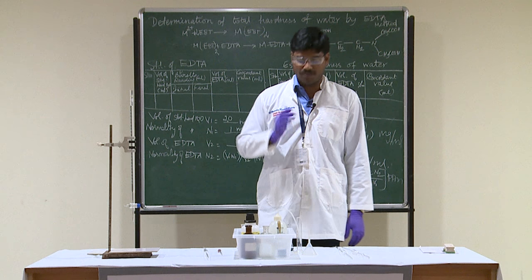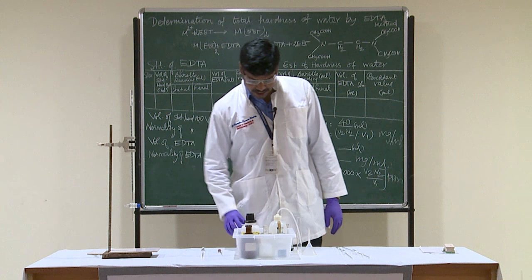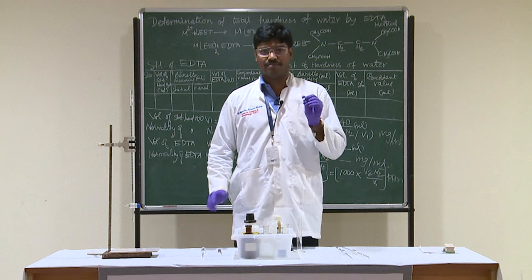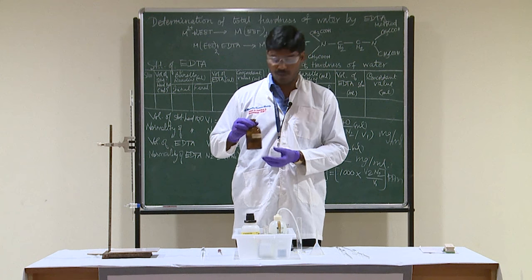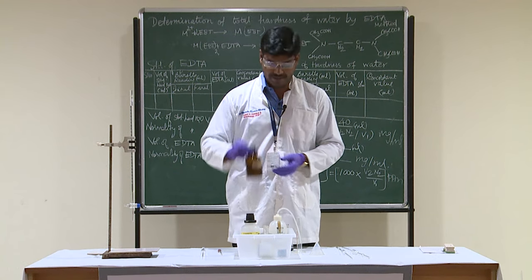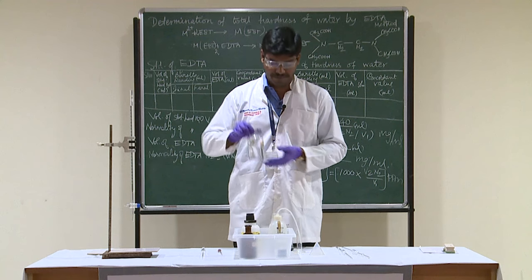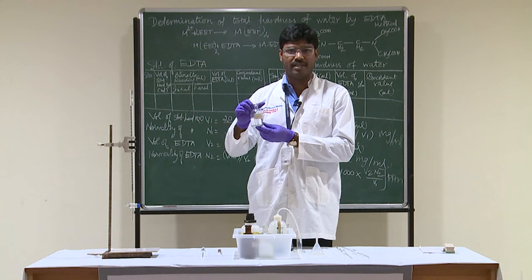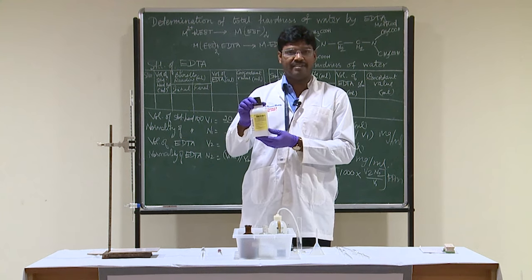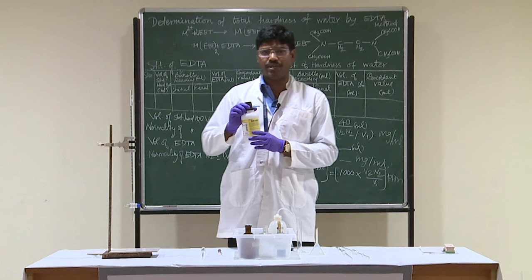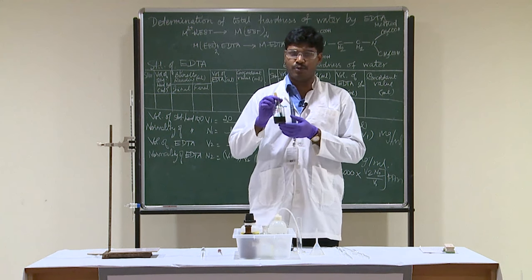The glassware needed for this experiment includes a burette, a pipette, a conical flask, and a funnel. The chemicals required are: the sample hard water whose hardness we need to analyze; EDTA as its disodium salt; standard hard water of known cation concentration; ammonia buffer solution, used here to avoid protonation of the disodium salt of EDTA; and the indicator Eriochrome Black T.